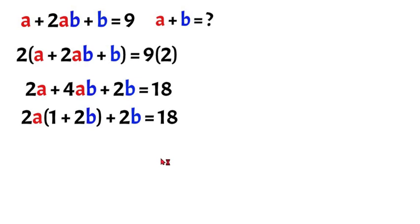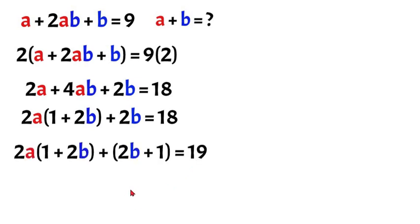Now we want this to be factorable so what we're going to do is we're going to add 1 to both sides of this equation. So we'll end up with 2b plus 1 and then 18 plus 1 will be 19.